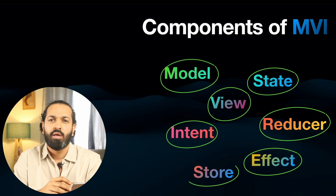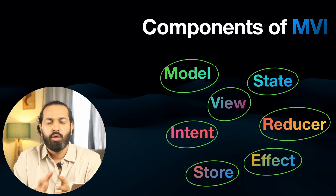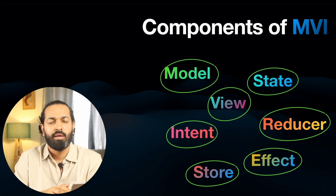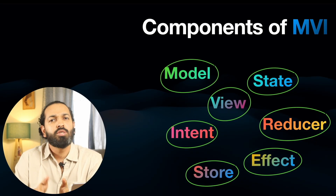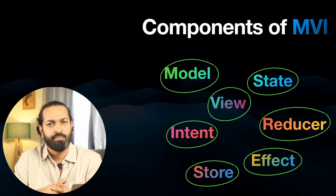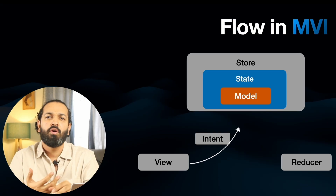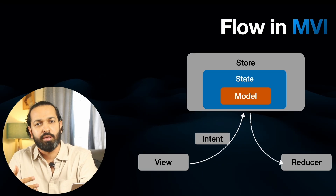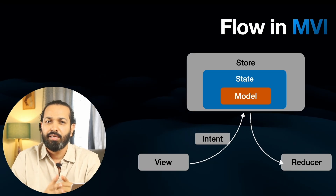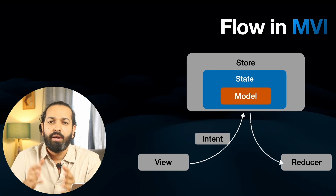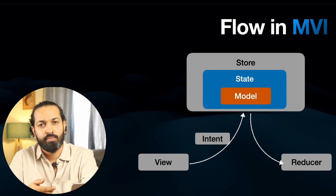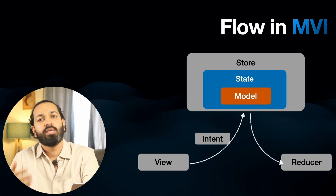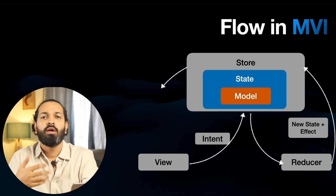The last component is the store. The store is like the conductor of all this. It holds the state, runs the reducer when an intent comes in, executes effects, and publishes the new state for the view to render. In terms of SwiftUI objects, the store is the observed object — it's the glue between everything. When any action is performed, the intent is passed to the store. The store sends the current state and intent to the reducer. The reducer updates the state, checks if anything else should be done, and returns the updated state and effects back to the store. The reducer itself does not perform that action — it returns it as an effect, and then the store executes it.